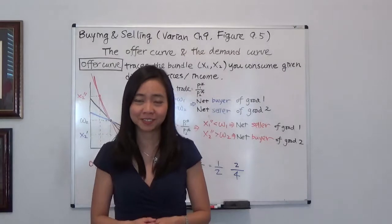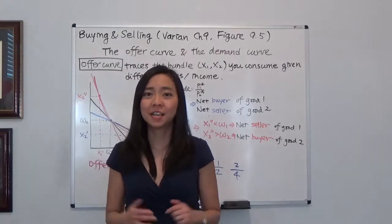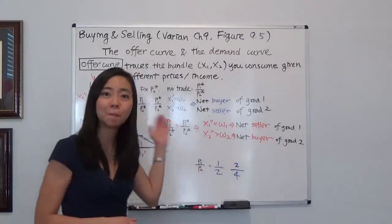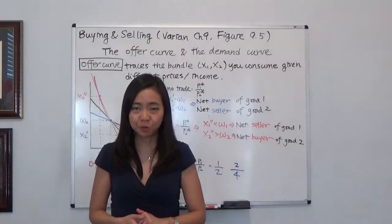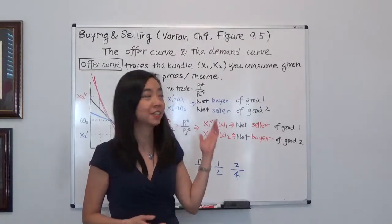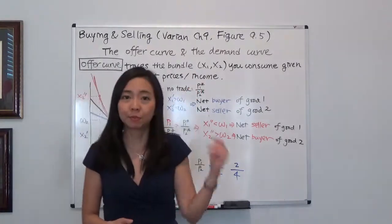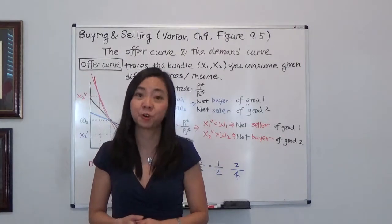Hello everyone, my name is Iris Franz. I'm Nian Wanru. Today we're going to continue to talk about buying and selling using Varian's book chapter 9, figure 9.5, and I'm going to show you how I derive the offer curve.